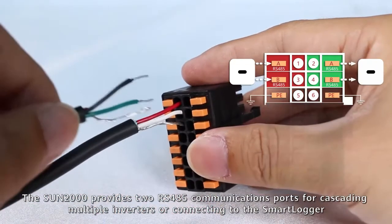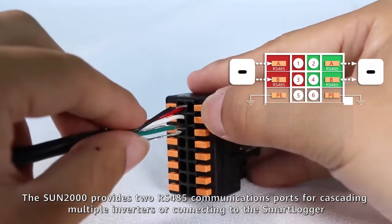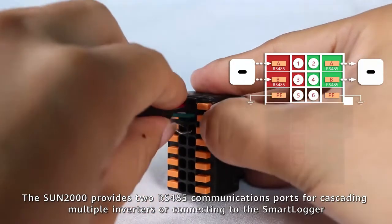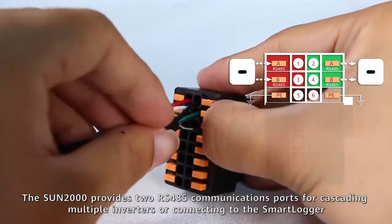The SUN2000 provides two RS485 communications ports for cascading multiple inverters or connecting to the smart logger.